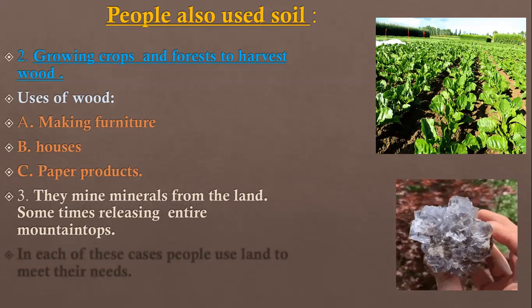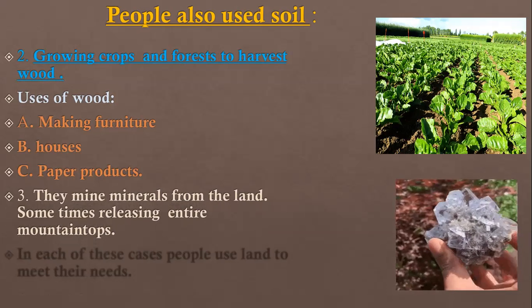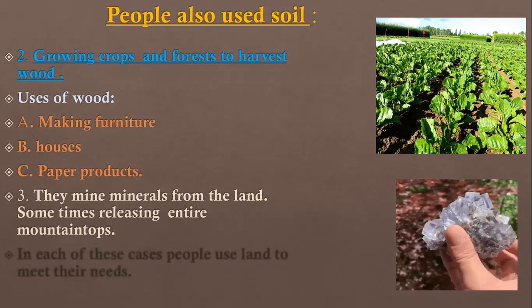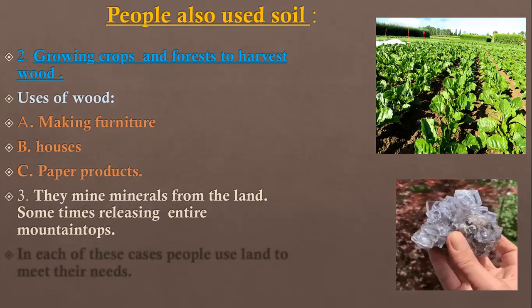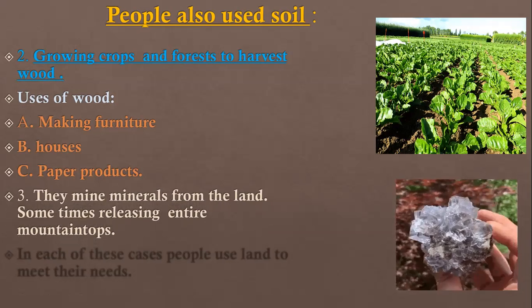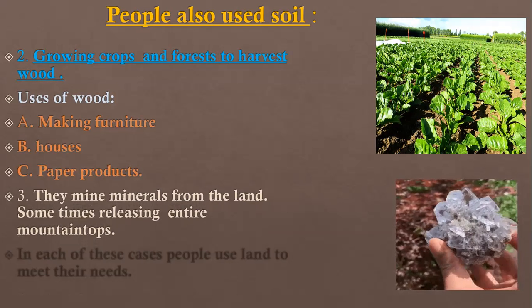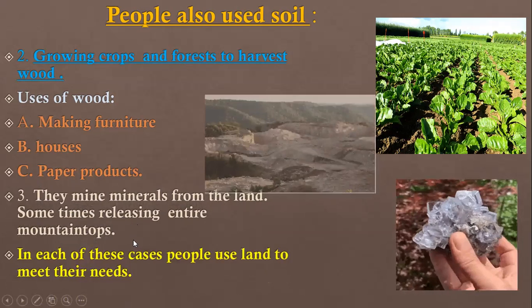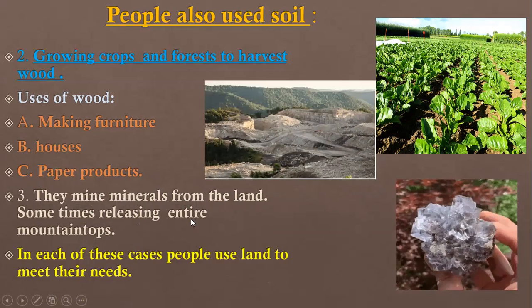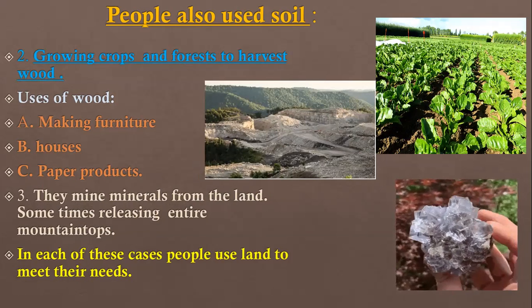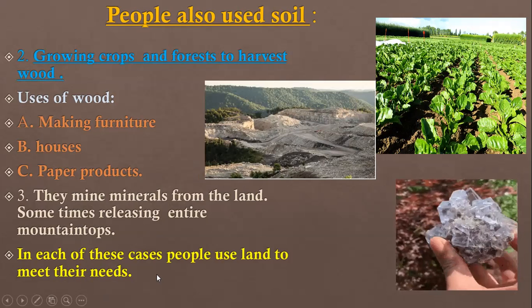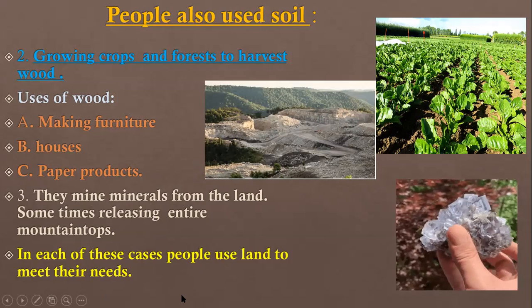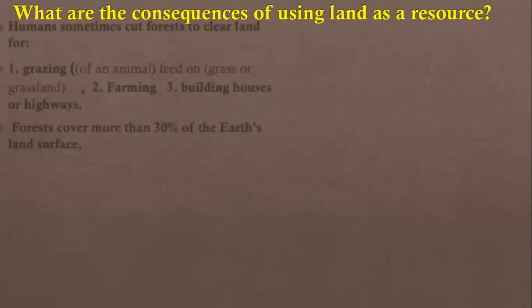They mine minerals from the land — they dig under the ground to take these minerals, such as silver, gold, and fossil fuels. All of these minerals can be found under the ground. Sometimes removing an entire mountain is required to find these minerals, which are important for humans. In each of these cases, people use the land to meet their needs, so land is a very useful and important natural resource.